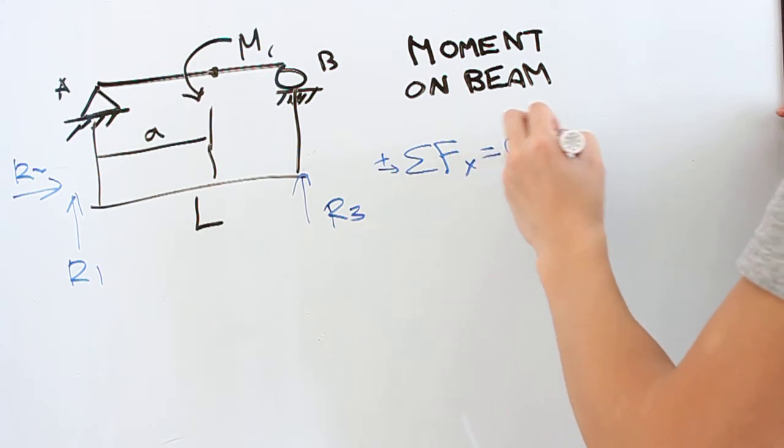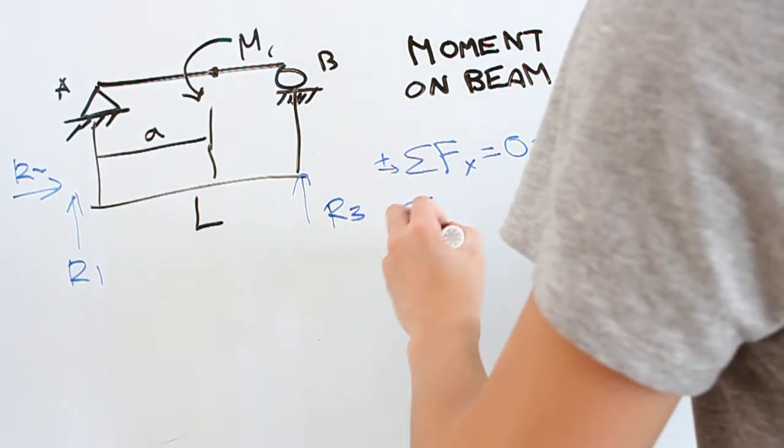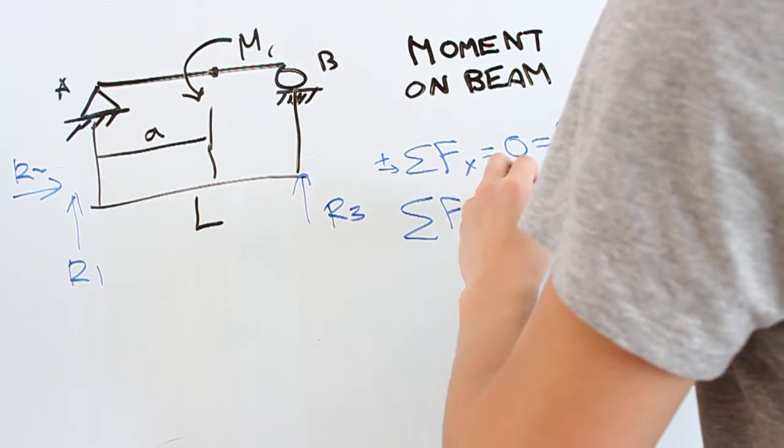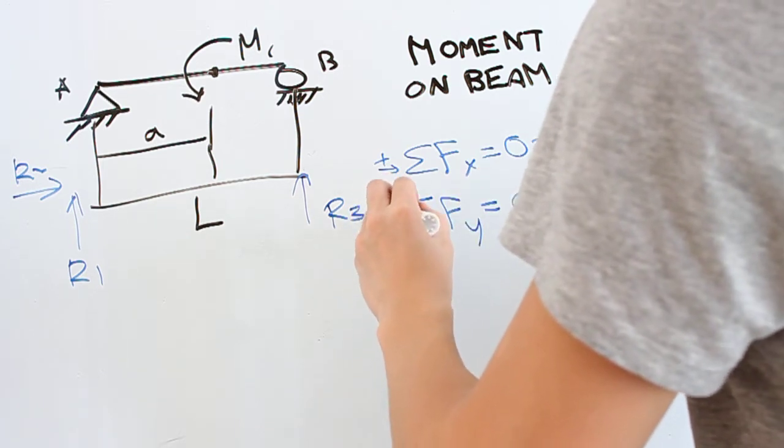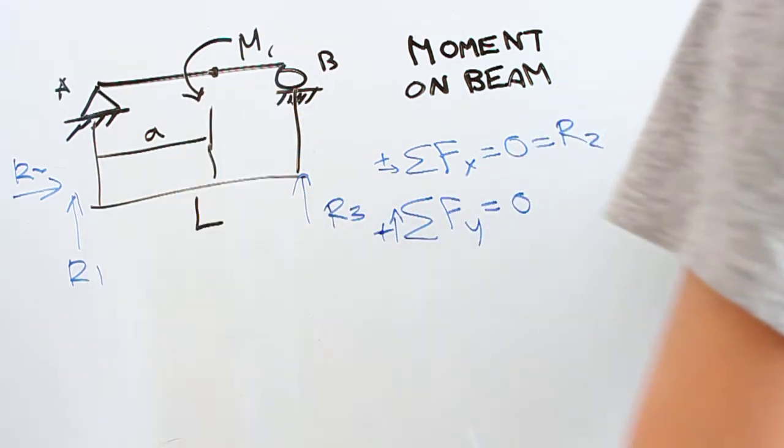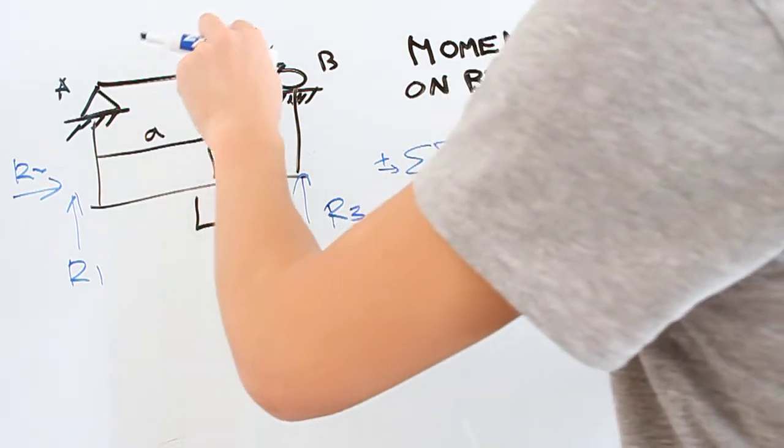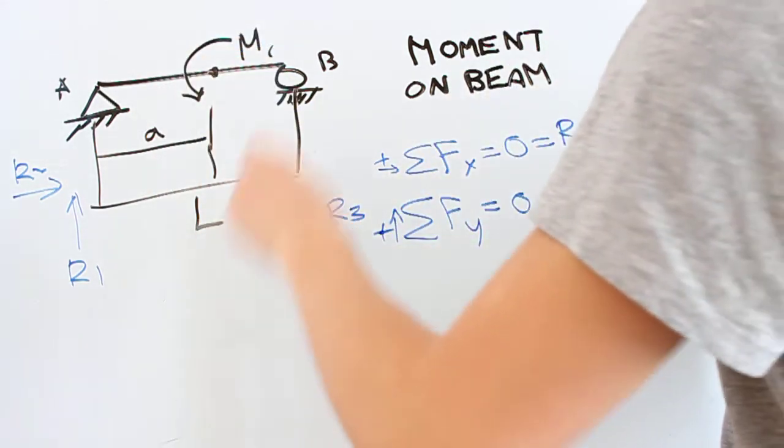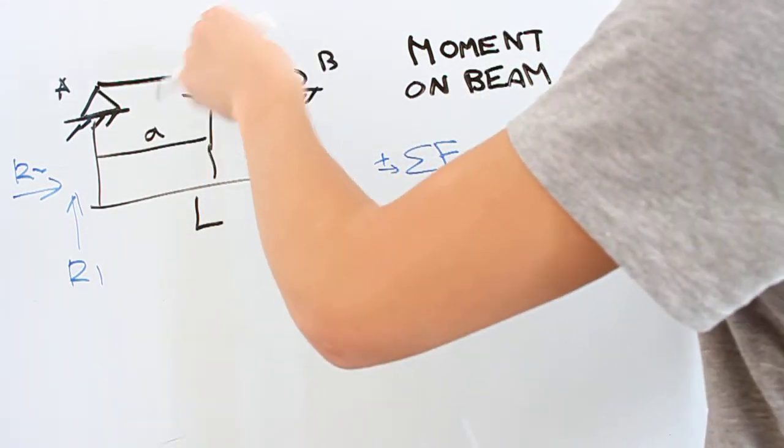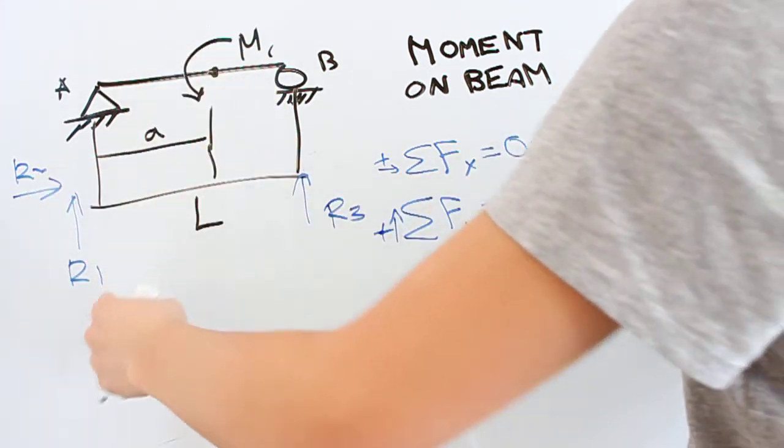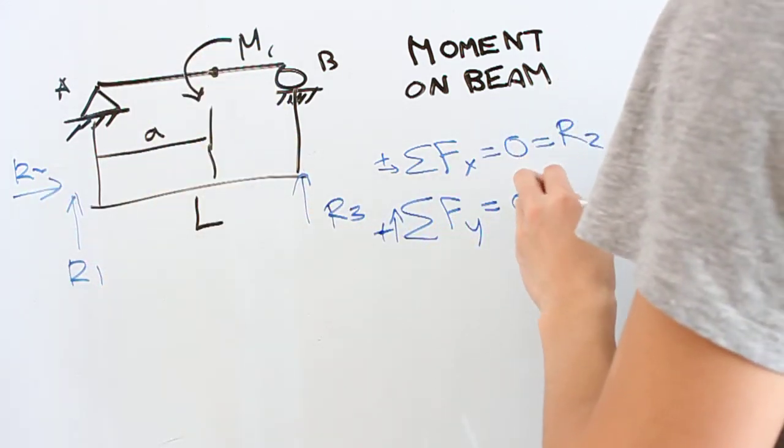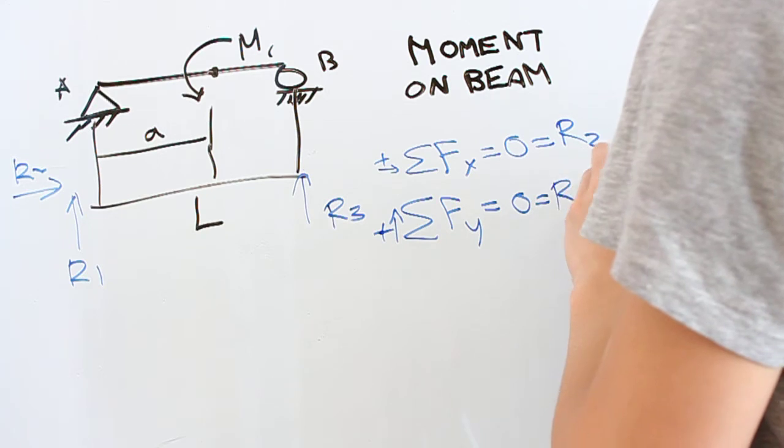Fx equals 0, again, R2, big deal. We have Fy equals 0. We only have two forces here in the vertical direction, because where we had P1 last time, we don't anymore. We don't calculate this as a force as we do these. We only have R1 and R3 both in the positive direction.